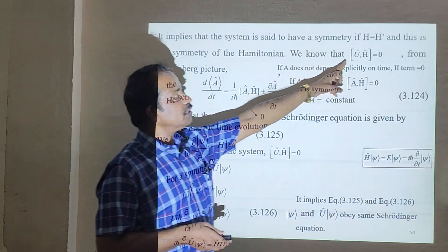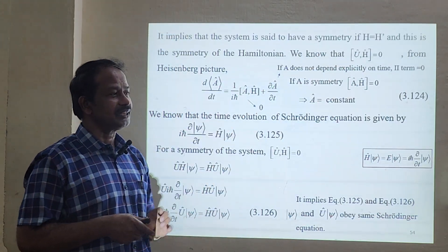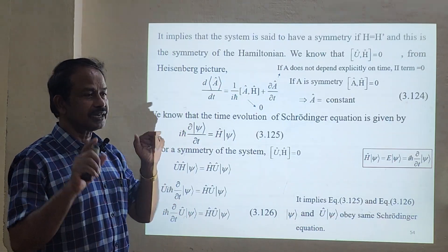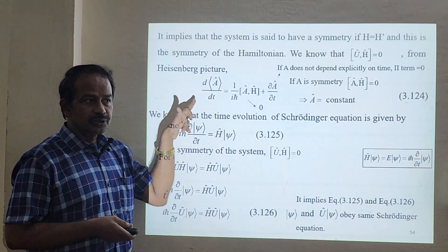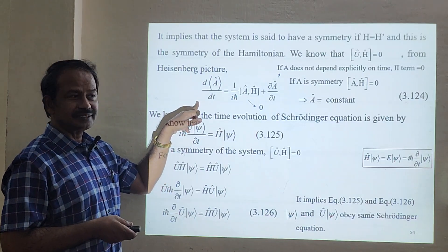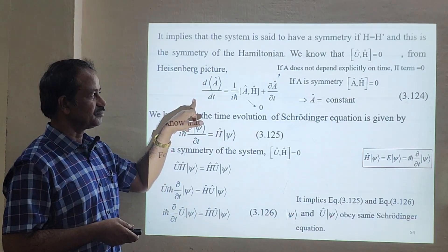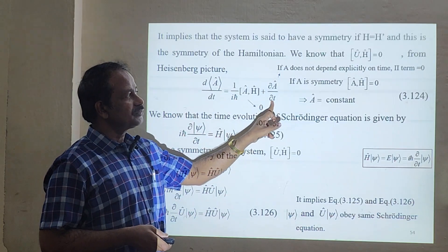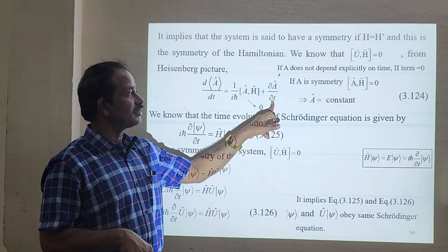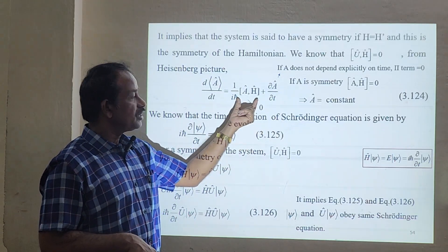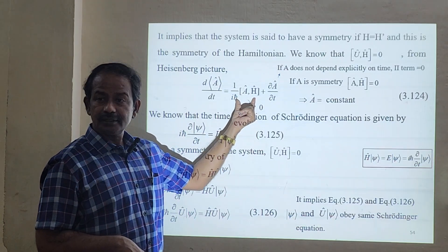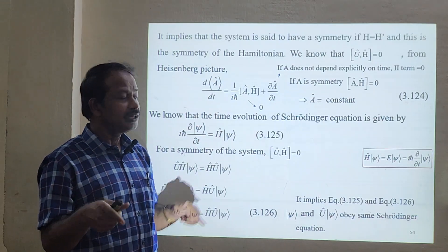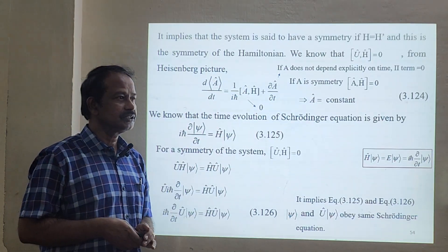From the Heisenberg picture equation of motion, the last term does not depend explicitly on time, so it becomes zero. This means [U, H] = 0, and therefore d⟨A⟩/dt = 0 — the expectation value of A is constant in time, confirming that A is a conserved quantity.